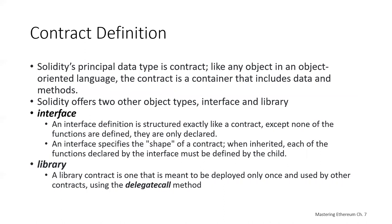Solidity's principal data type is a contract, just like Java's principal data type is a class. Our faucet example from a previous lecture simply defines a contract object similar to any object in an object-oriented language — the contract is a container that includes data and methods. Solidity offers two other object types similar to a contract: an interface and a library. An interface definition is structured exactly like a contract except none of the functions are defined — only declared — similar to interfaces in Java or C++, often referred to as a stub. A library contract is one that is meant to be deployed only once and then used by other contracts using the delegate call method, similar to a package or library in other programming languages.